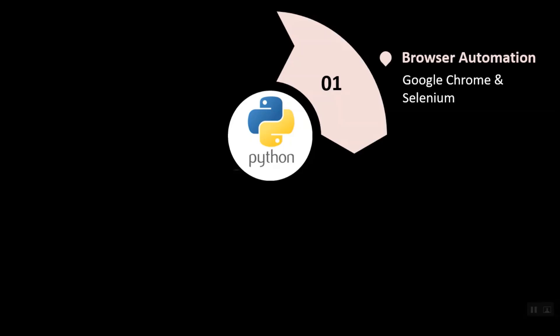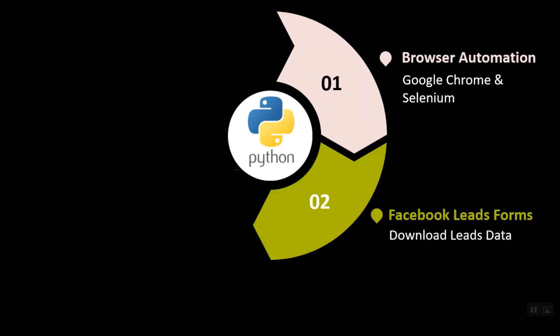The best thing is it is open source and free for everyone to use. The first step will be to make our Chrome browser ready for automation. It's just a one-time process that we need to do and will hardly take five minutes. Once this is done, next we will automate the crawling of the Facebook lead forms page. This will be the main activity and you can call it the heart of the process.